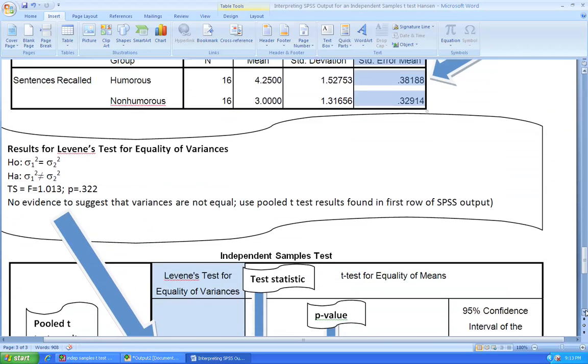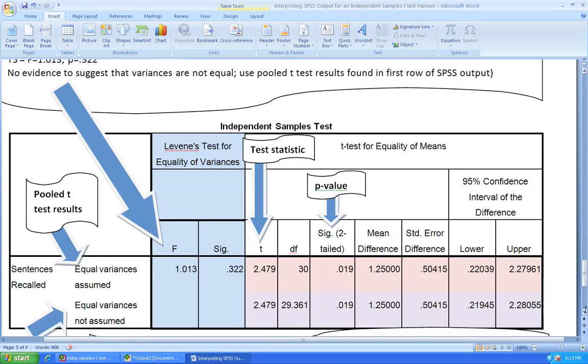Moving down to the second table that is provided, highlighted in blue on this page is the output that exists for Levene's test for equality of variances. Note that there is a test for equality of variances and then a t-test for equality of means that is found on the right half of the output. Even though we asked for independent samples t-test output, we were given this Levene's test for the equality of variance by default.